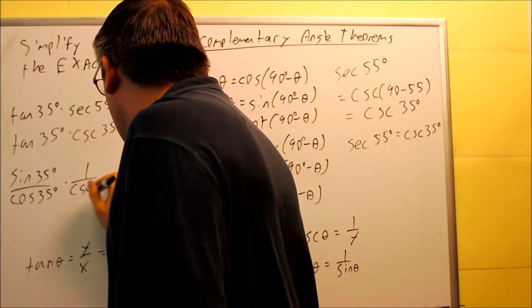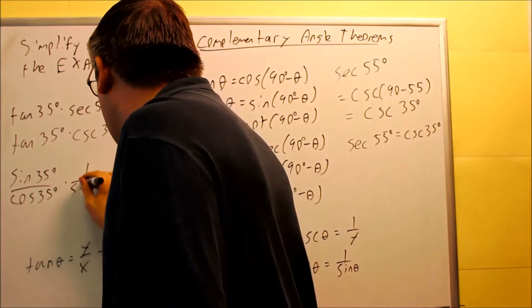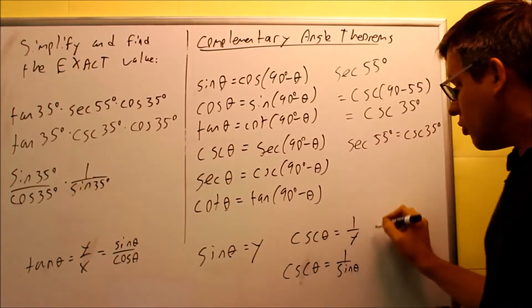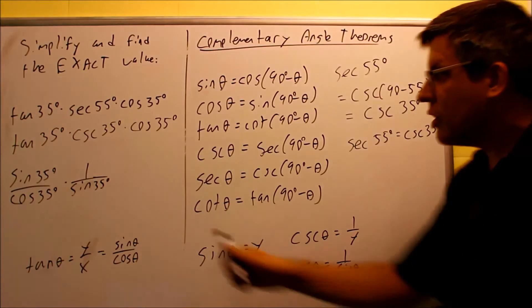1 over cosecant, or sorry, 1 over sine of 35 degrees. We're using the identity there, so 1 over your cosecant would be the same thing as 1 over sine. So, you have that here.